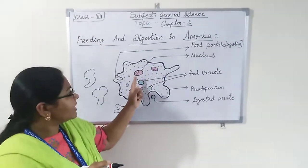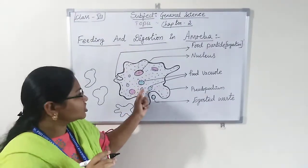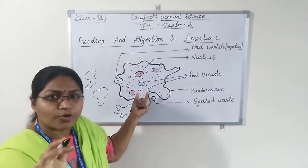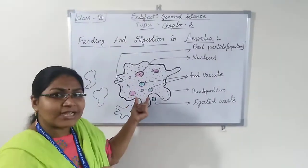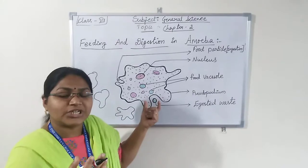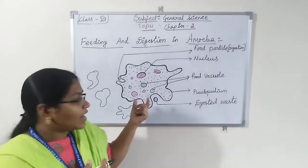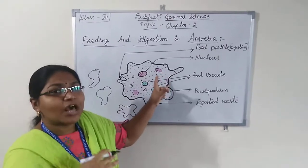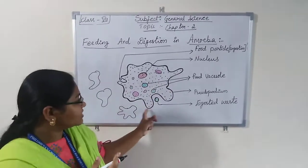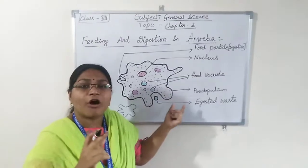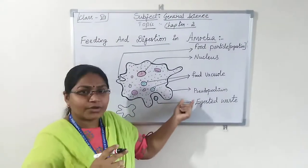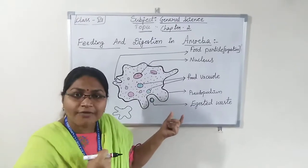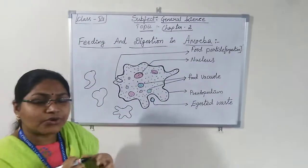Amoeba is a single-celled microorganism found in pond water. It has a cell membrane, nucleus, and many round bubble-like structures called food vacuoles present in its cytoplasm. It continuously changes its shape and position. You can also observe finger-like projections outside, which we call pseudopodium or false feet, used for movement and to capture food.